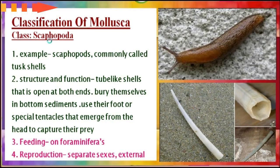The second class is Class Scaphopoda. An example is scaphopores, commonly called tusk shells. Their tube-like shell is open at both ends, and they bury themselves in bottom sediments. They use their foot or special tentacles that emerge from the head to capture prey, feeding mostly on foraminifera. Reproduction involves separate sexes and is mostly external. These are the representative members of this class.